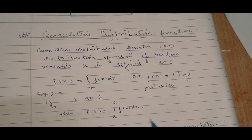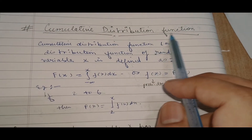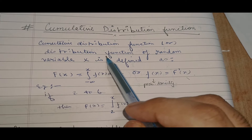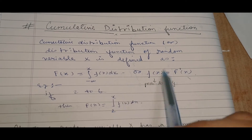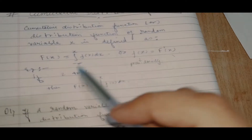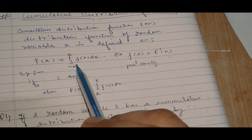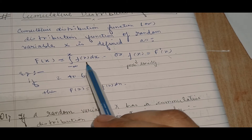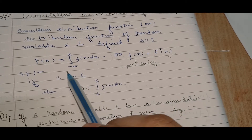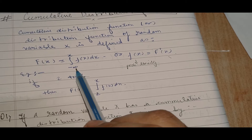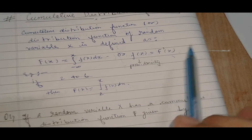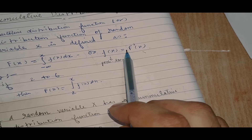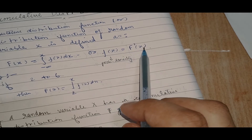The second concept is the cumulative distribution function. The cumulative distribution function, or distribution function, of a random variable x is defined as capital F(x), where small f(x) is integrated from minus infinity to x. Equivalently, small f(x) equals the differentiation of capital F(x).